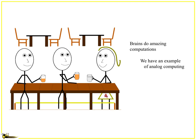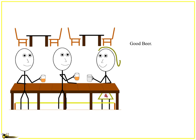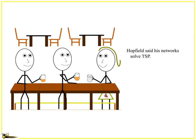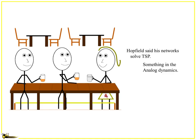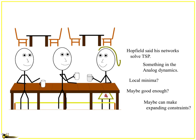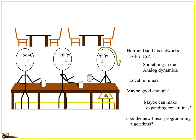People would say, well, brains are using computations — that's a good example of analog computing. And yet Moore's Law makes digital better every year, and that's just going to happen. Hopfield said networks have solved the traveling salesman problem. There's something in the analog dynamics to that. But what do you do about the local minima? Maybe you can get a good enough solution, or do some expanding constraints. And all sorts of things about what computing could look like.